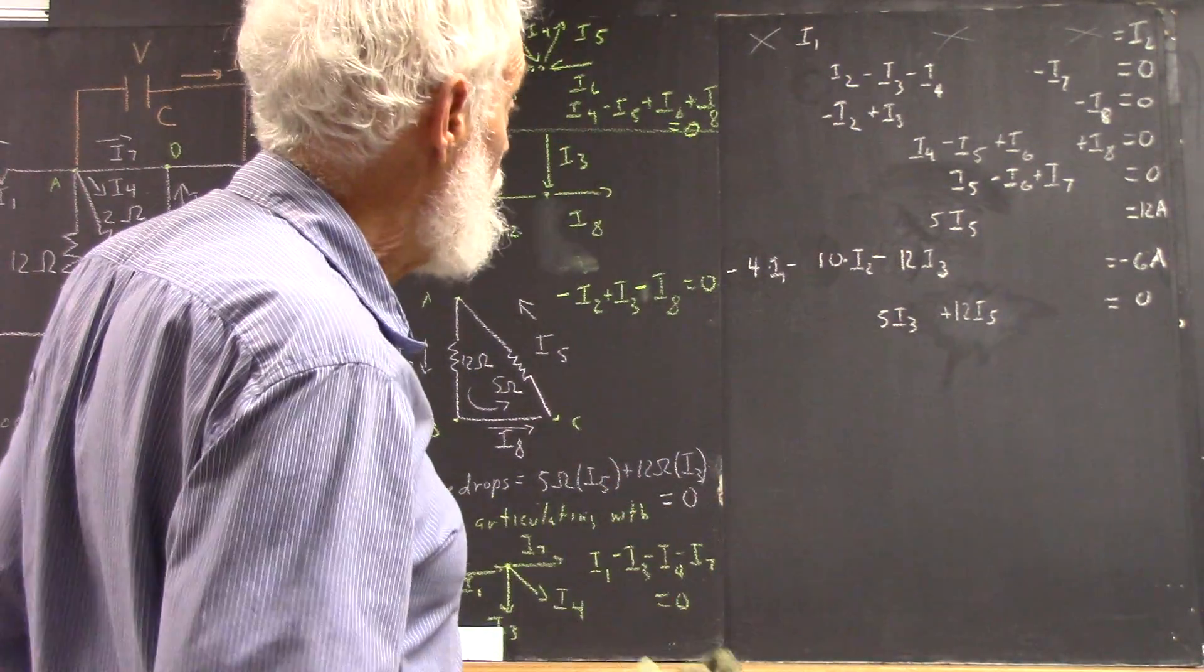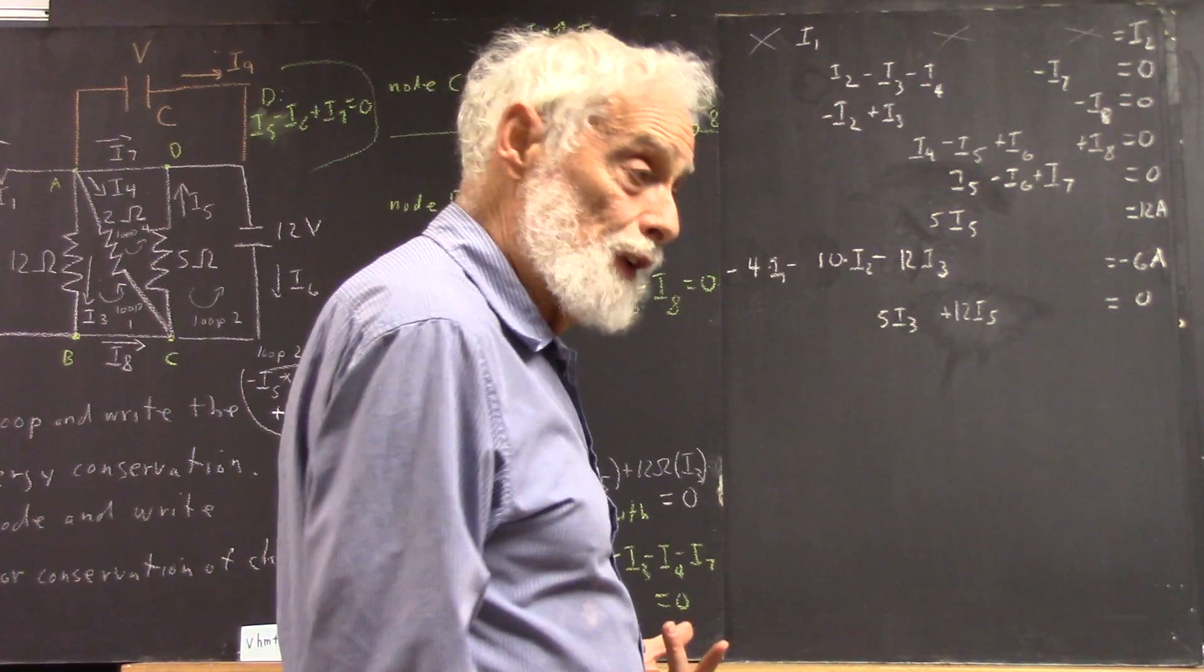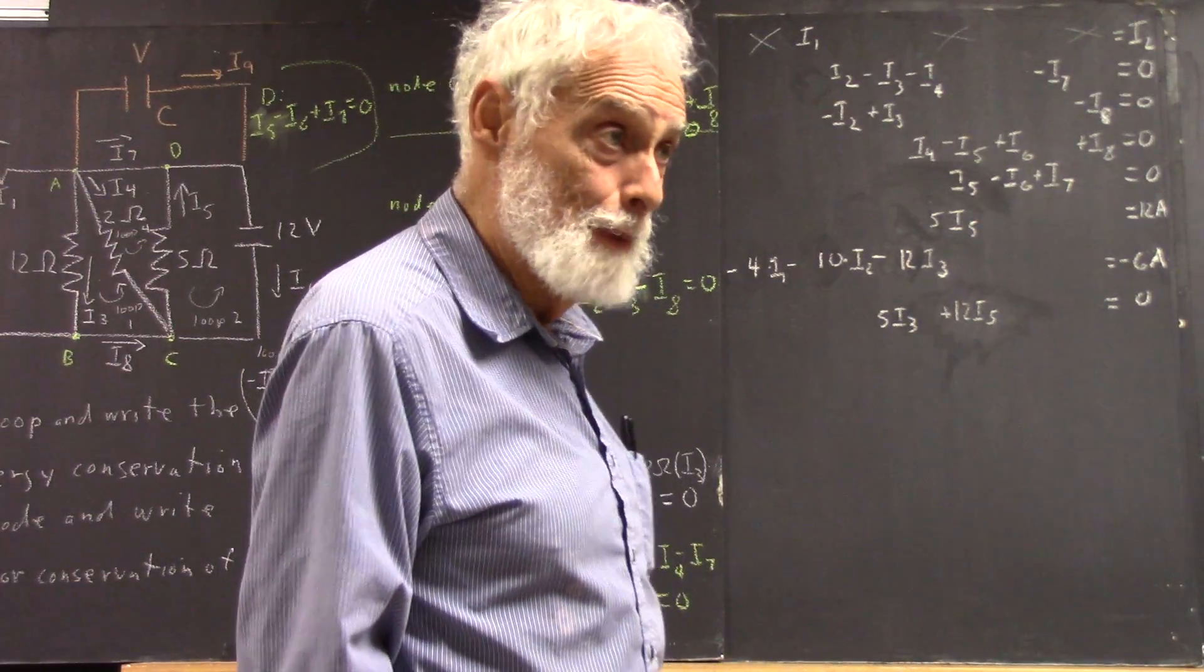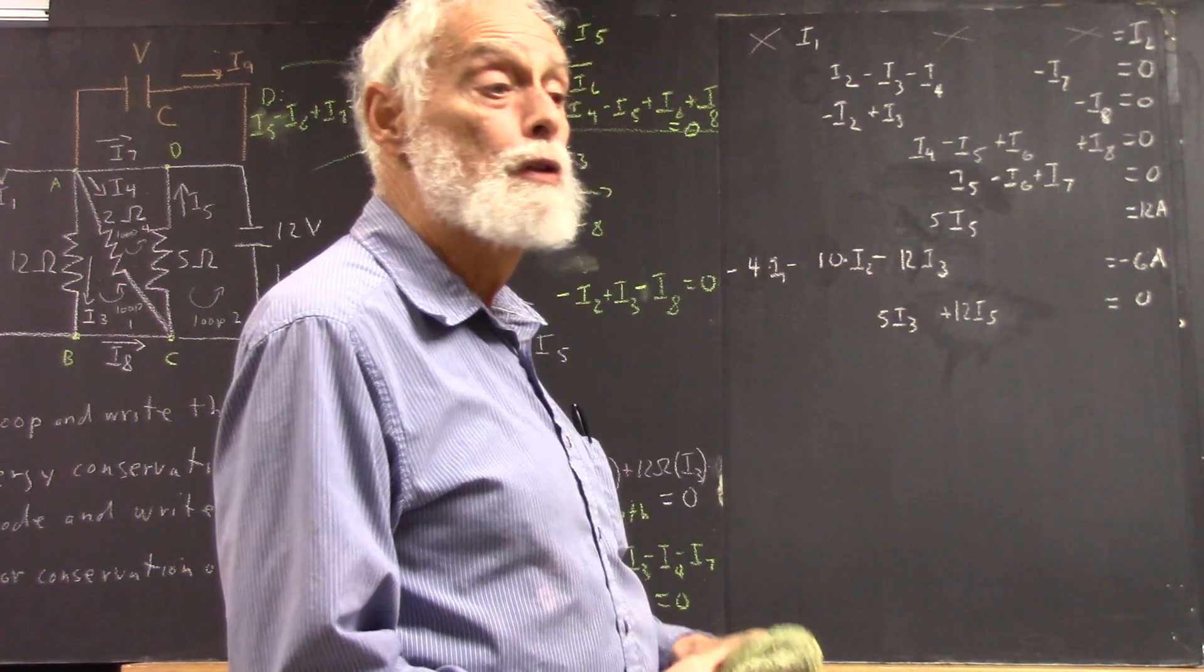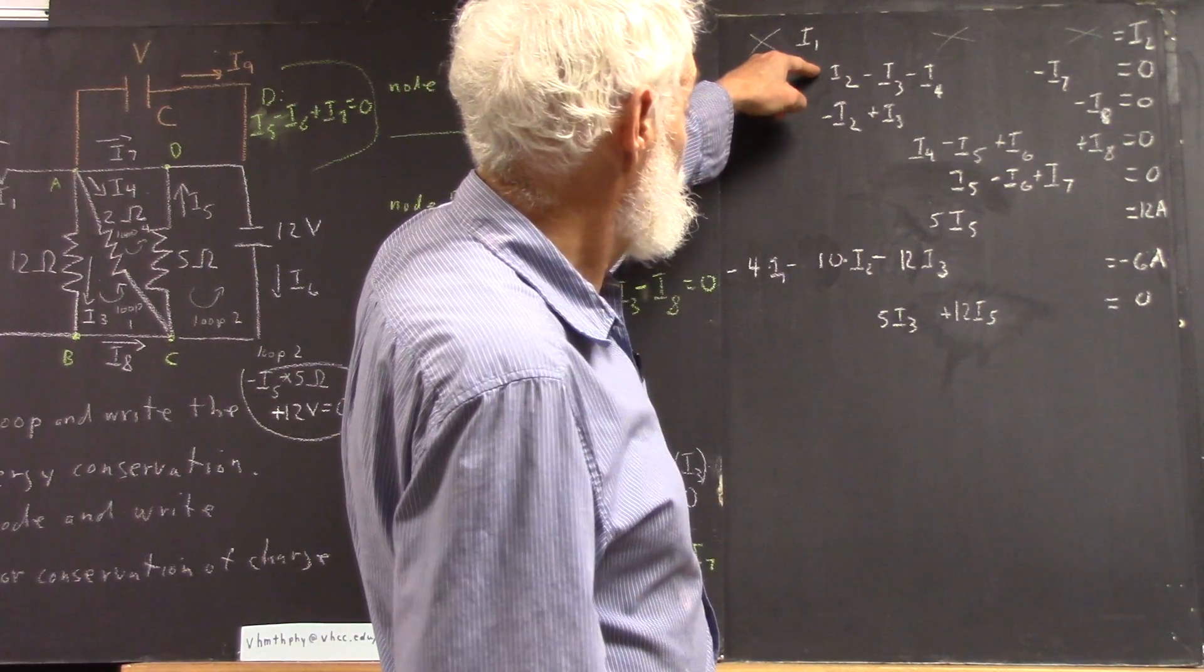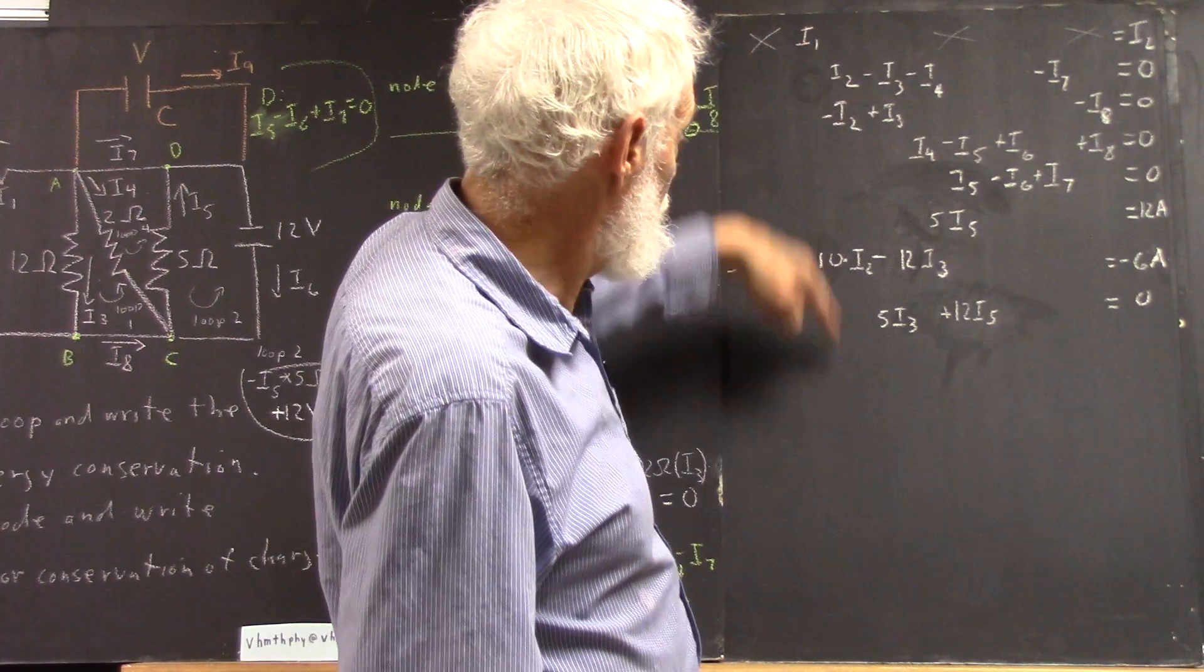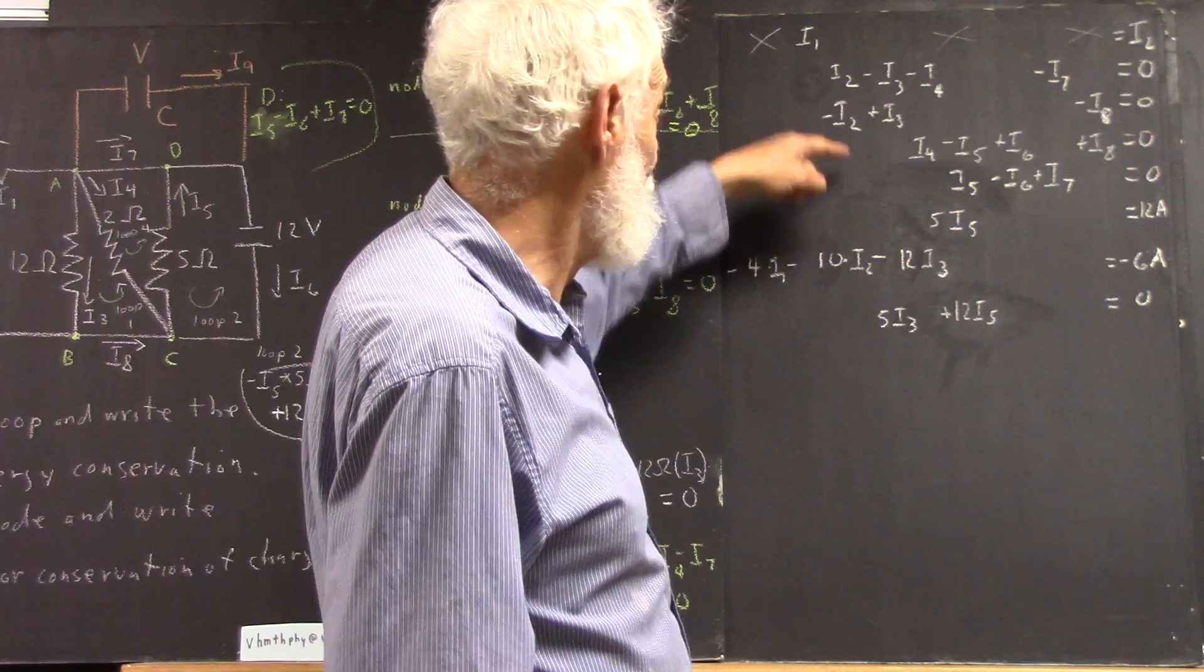Okay, now we can see that if I just follow standard row reduction type process, which is usually the easiest way to do this by hand, using the first equation or the second, I can wipe out all the I2s, except that one, right?